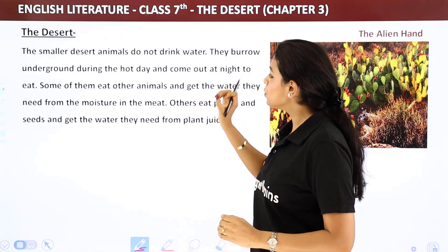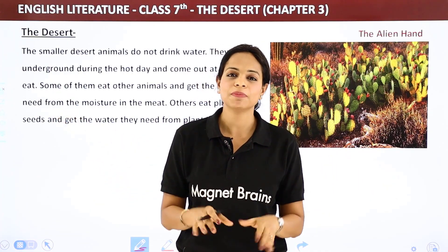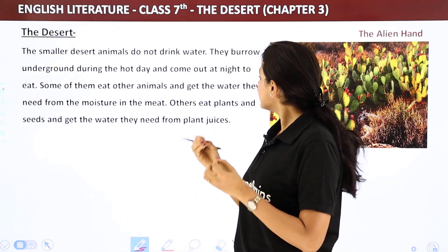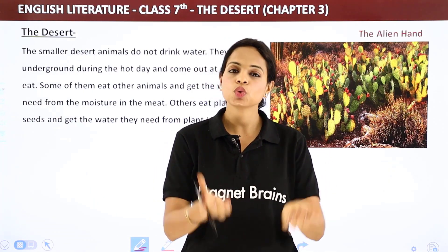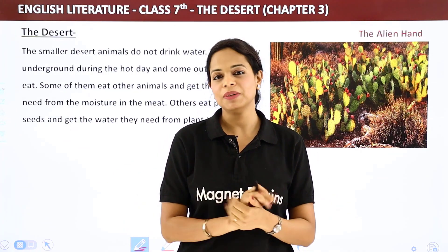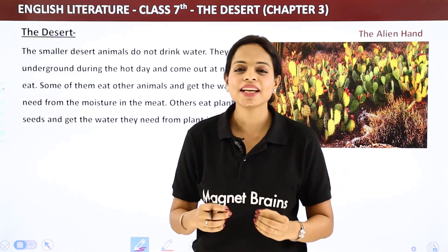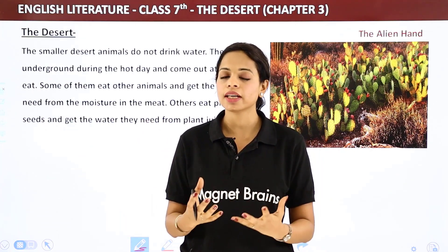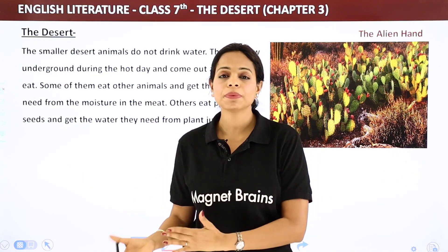Smaller animals burrow underground during the hot day and come out at night to eat. Some of them eat other animals and get the water they need from the moisture in the meat. Others eat plants and seeds and get the water they need from plant juices — like fleshy plants such as cactus contain water. This is what adaptation is — they have adapted themselves.